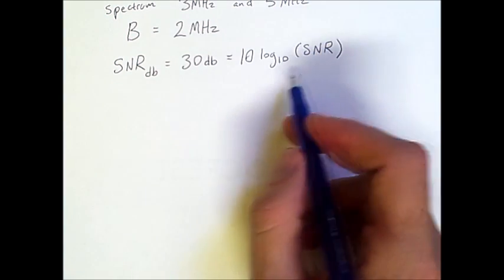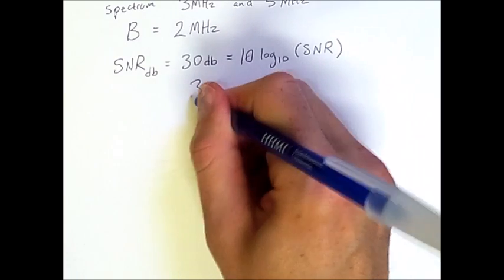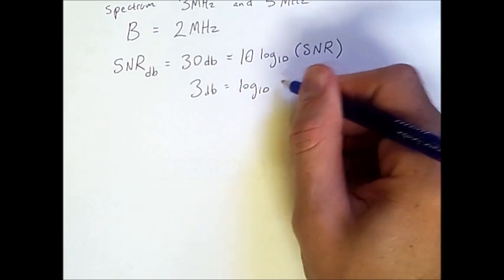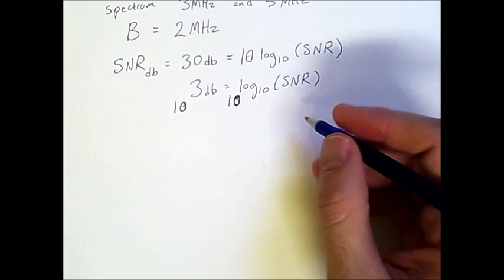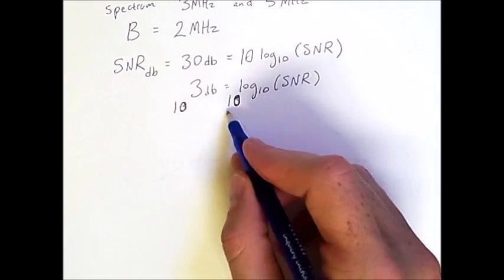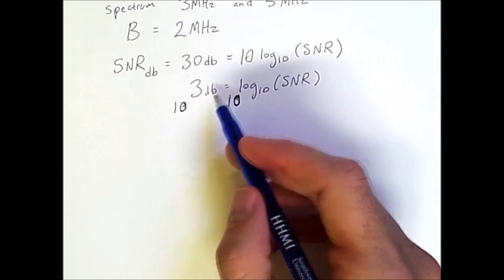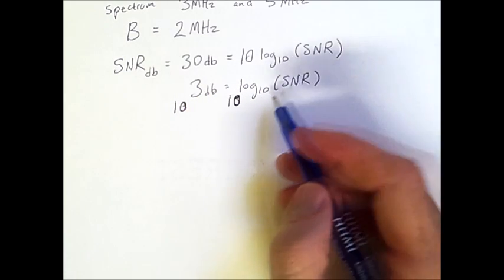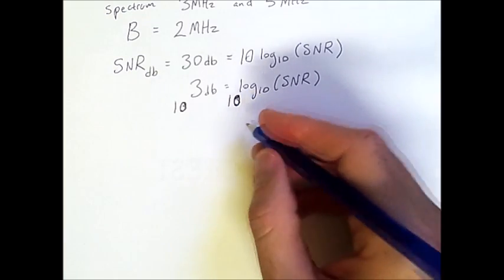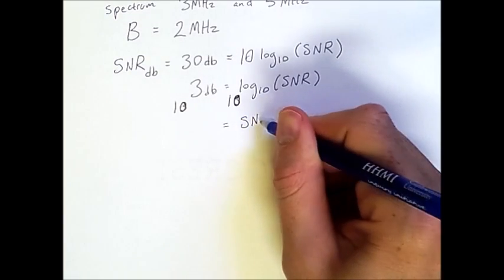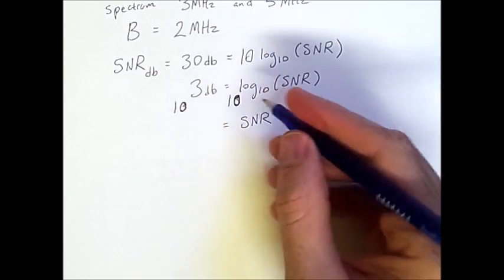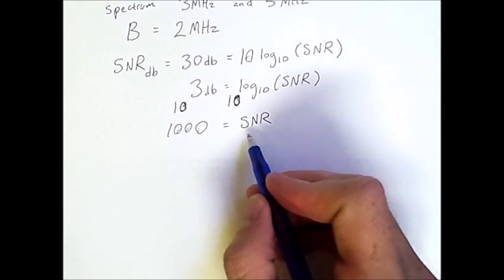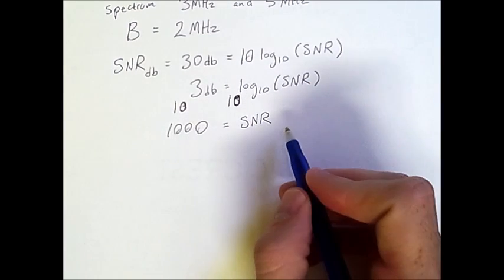So, first, we'll divide both sides by 10, and we'll be left with 3 equals log 10 of SNR. And to get rid of the log base 10, we have a base of 10 on each side, and we're raising this 10 to the third, and this 10 to the log 10 of SNR. So, 10 raised to the log 10 simply cancels out, and we're left with SNR on this side, and 10 raised to the 3 is simply 1,000. So, we have now our unitless SNR value, 1,000.